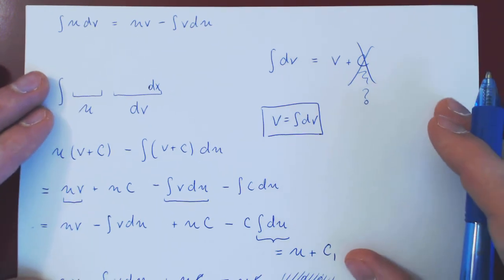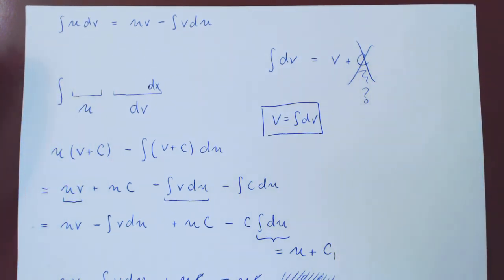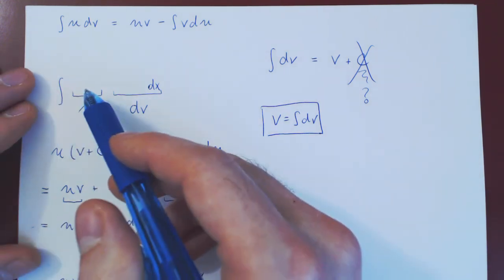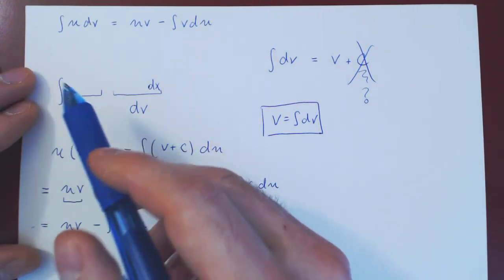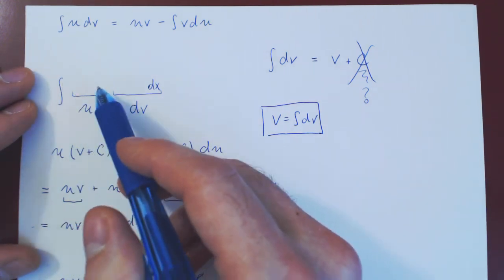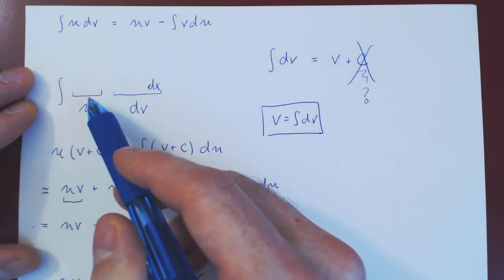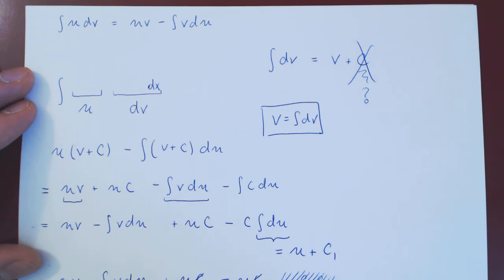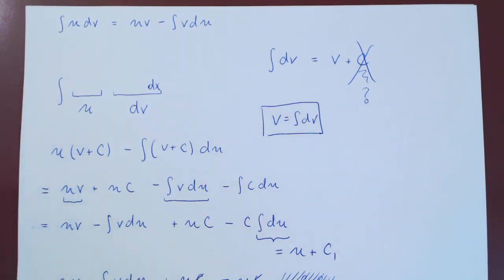So that's it for integration by parts. In our next videos we'll consider examples, and you'll understand better why you choose u so that the derivative gives you the greatest simplification — not the simplest derivative, but the greatest simplification.